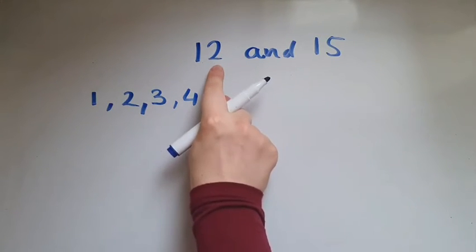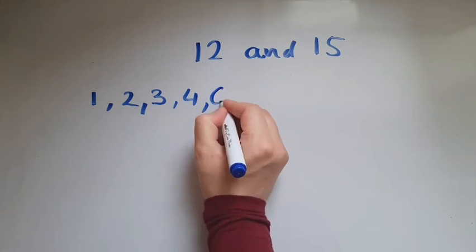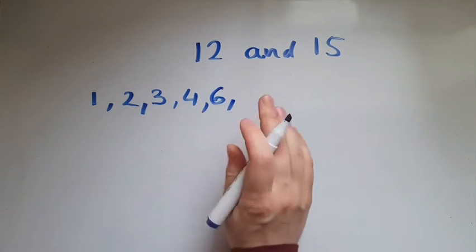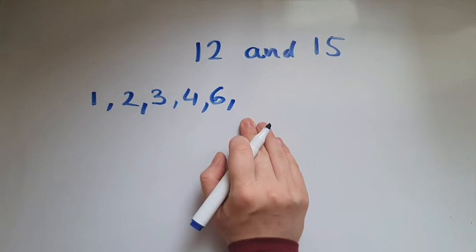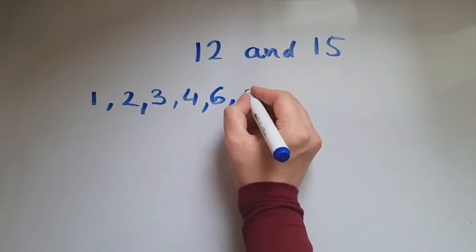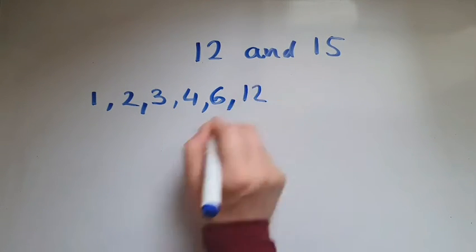What about 6? Yes, because 6 times 2 gives us 12. 7 is not. 8 is not. 9 is not. 10 is not. 11 is not. But 12 is. So the factors of 12 are: 1, 2, 3, 4, 6, and 12.